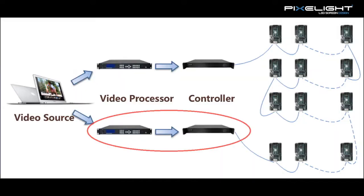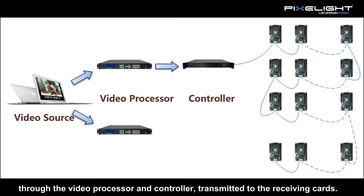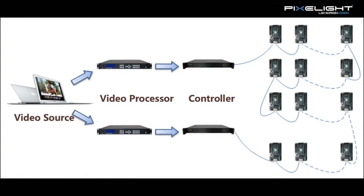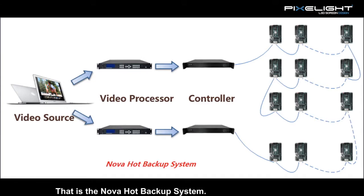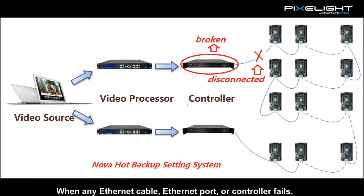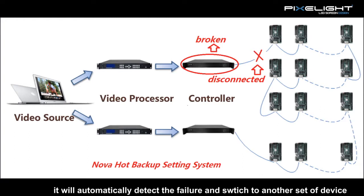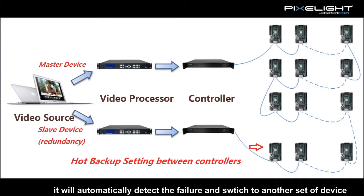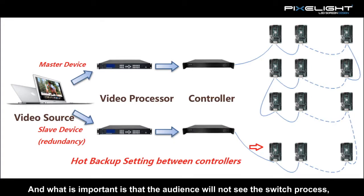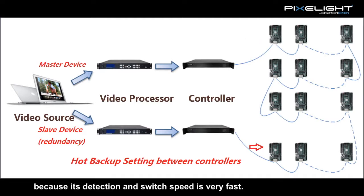But will the screen really go black? No. If we set up hub backup, the screen will not go black and the video data transmission will remain clear. The reason is there is also a second set of devices from which the video data can start, passing through the video processor and controller to the receiving cards. That is the NOVA hub backup system. When any Ethernet cable, Ethernet port, or controller fails, it will automatically detect the failure and switch to the other set of devices. Importantly, the audience will not notice the switch process because detection and switching speed is very fast.